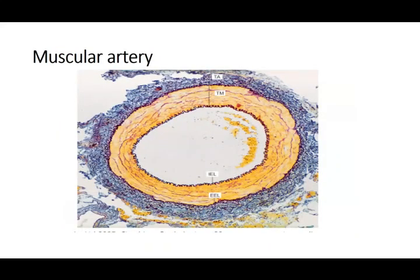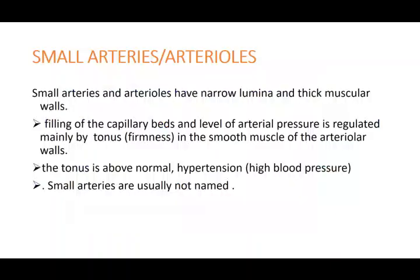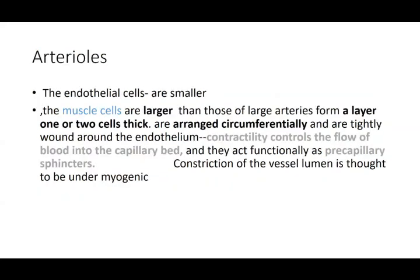In the muscular artery slide, the wavy margin representing the internal elastic lamina is very prominent — unlike in the elastic artery where it cannot be made out. Small arteries or arterioles have a narrow lumen and thick muscular walls; arterial pressure is regulated by these and tone is maintained. The arterioles have smooth muscles arranged circumferentially around the endothelium. At the entrance to capillaries, circularly arranged smooth muscle forms precapillary sphincters controlling blood flow into the capillaries.